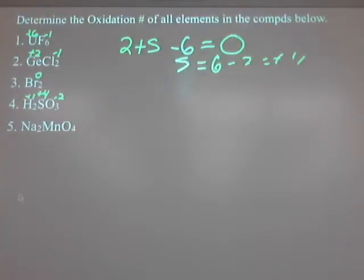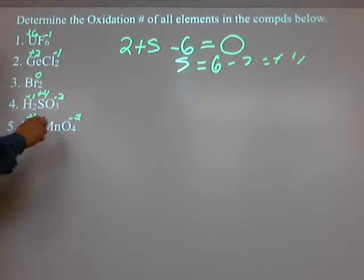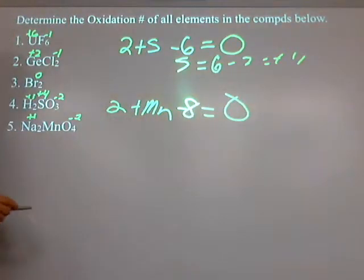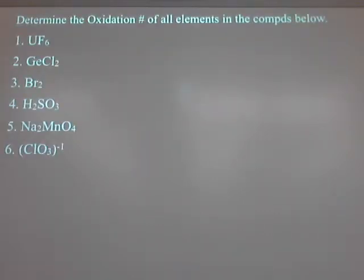Na2MnO4. This is another good example of guys where I don't have a definite rule. I do have one: I have oxygen, he's minus 2. But I don't know about sodium and manganese. Which one would you choose to keep his common state? I'd choose sodium. He's all the way over there at group 1, whereas manganese is in the middle of the transition elements. Manganese has like 6 or 7 oxidation numbers. In this case, what is he? 2 times 1 is 2 plus Mn minus 8 equals 0. So what is he? Plus 6.